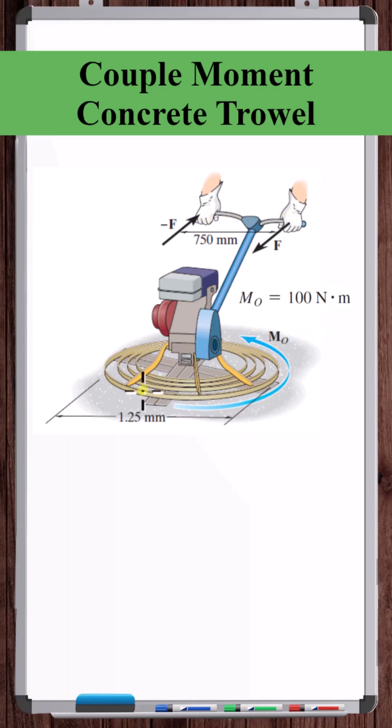We can see that the axis of the moment exerted on the machine from the concrete floor is straight up and down. Based on the right-hand rule, if you put the curl of the fingers of your right hand in this direction, the thumb points straight up.